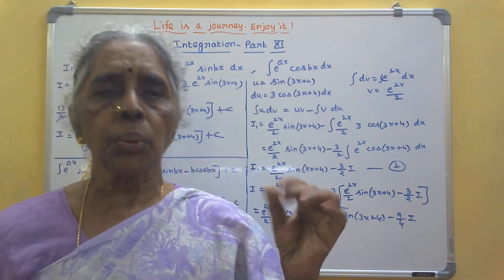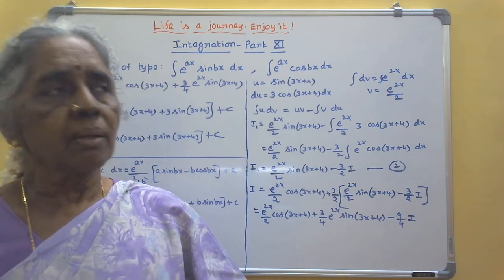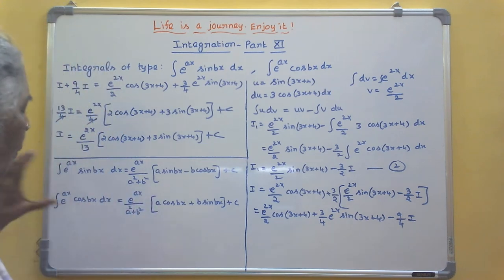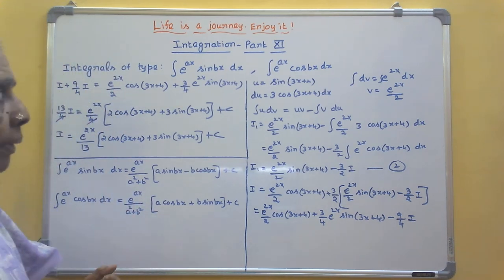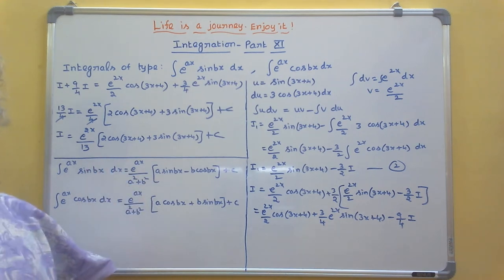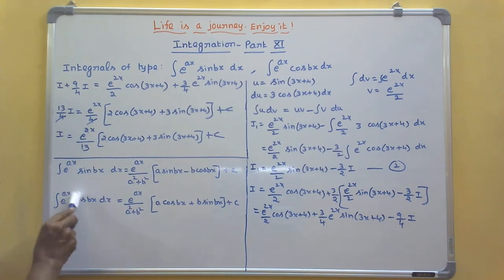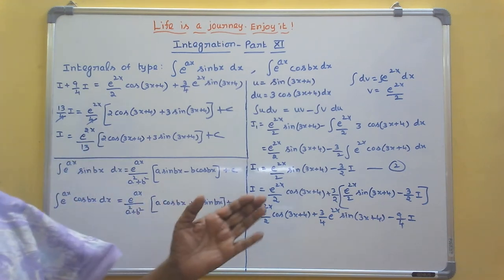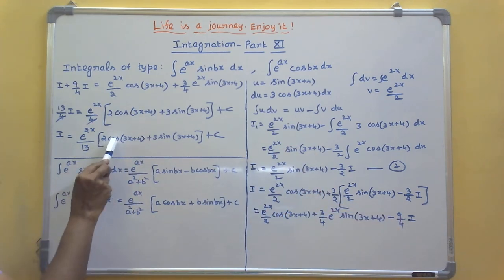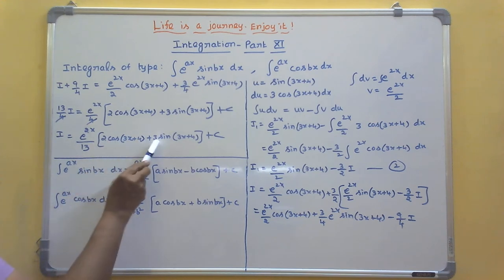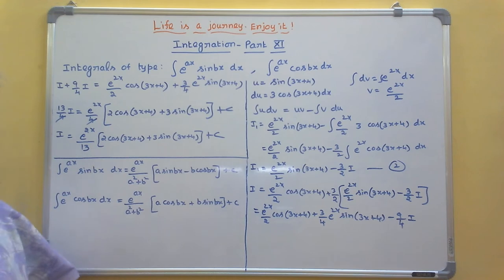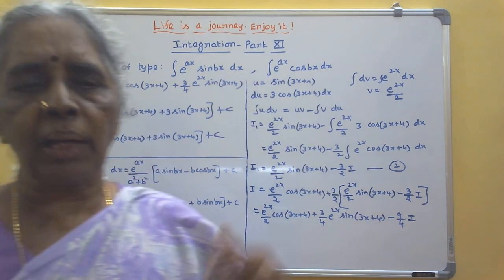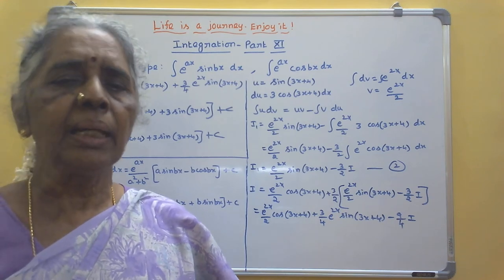There are two uses for these formulae. One is for MCQ. Another use: if this sum comes as a 5-mark question, you can check your answer using the formula. For example, in the sum we did, a is 2 and b is 3, of the type e^(ax) cos(bx) dx. So: e^(2x), divided by a² + b² which is 4 + 9 = 13, times [a cos(bx+c) + b sin(bx+c)] — if it is bx+c, then bx+c. Learn these two formulae and write them in your notebook.